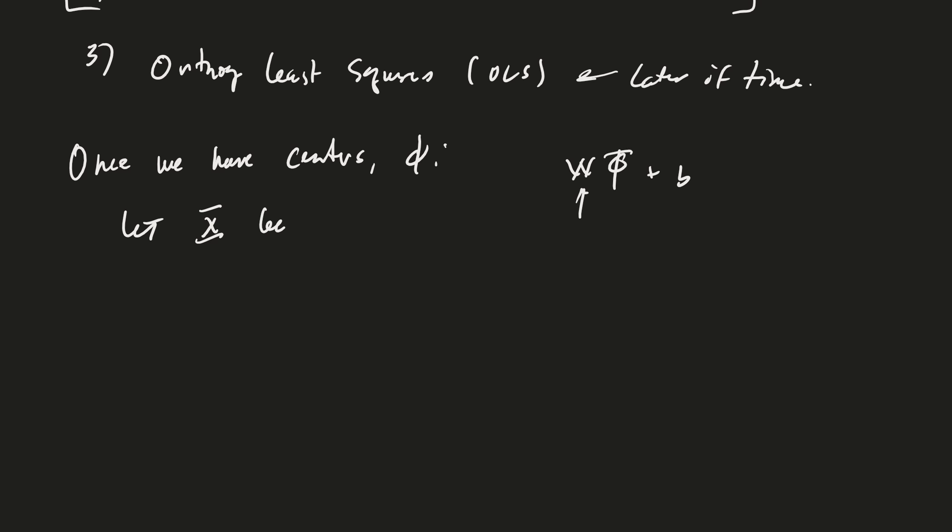Let's call it capital phi plus b. I'd like to have this defined. This is going to be m by k, and so that's going to be k by p, and this will be m by one, but it's going to be repeated several times. So if X is my n by p data points...